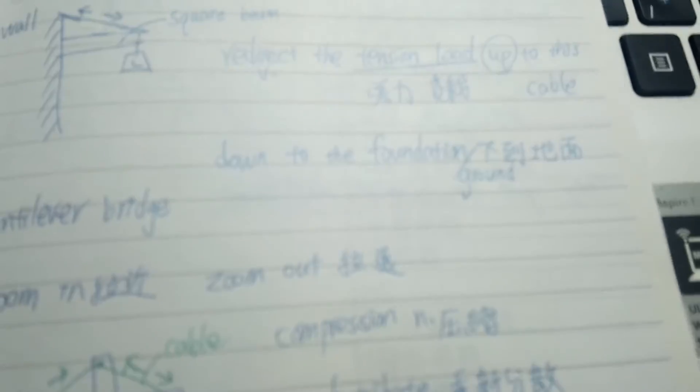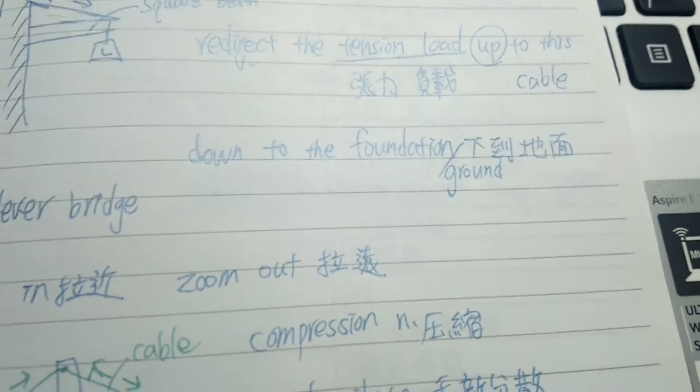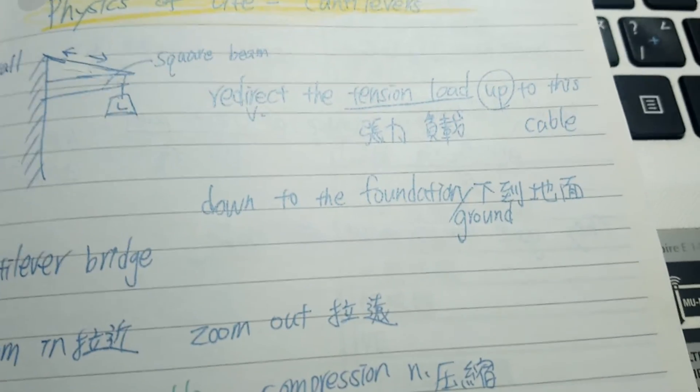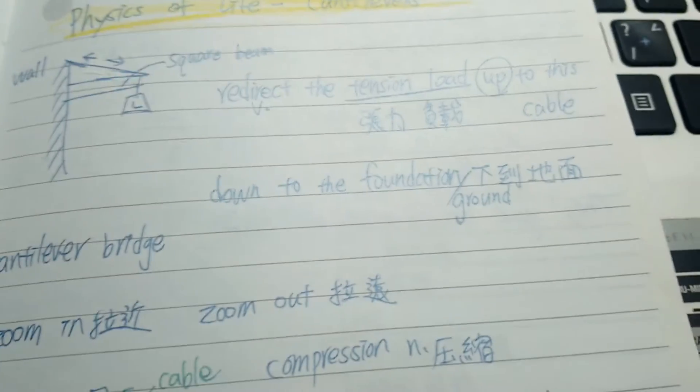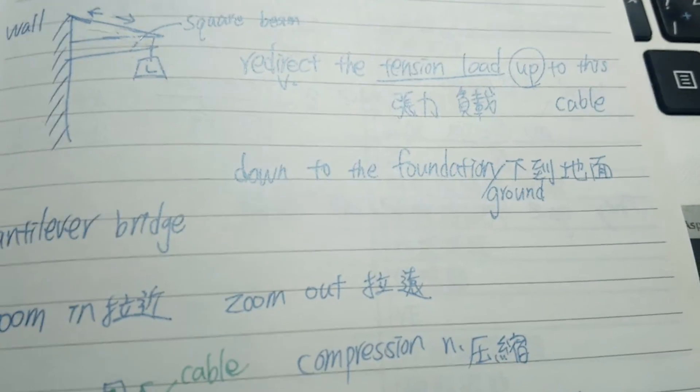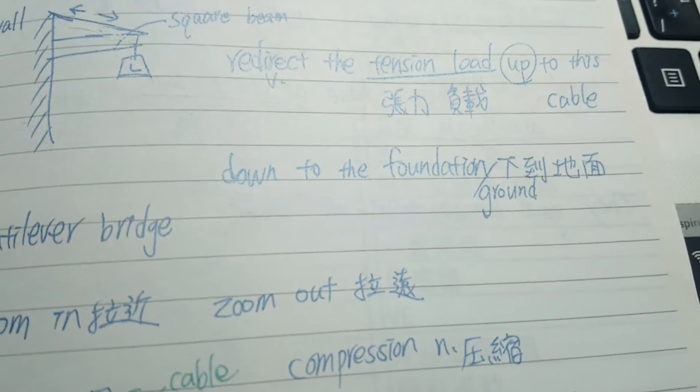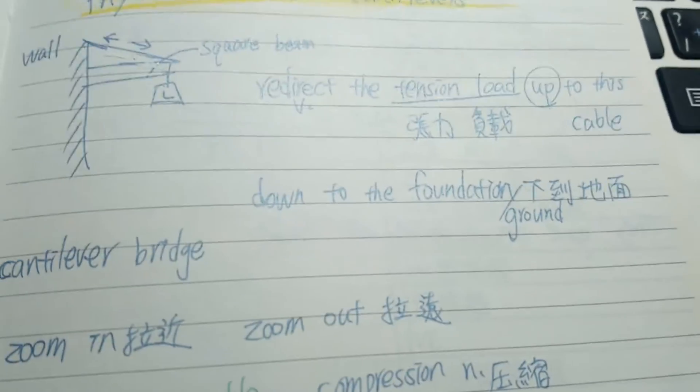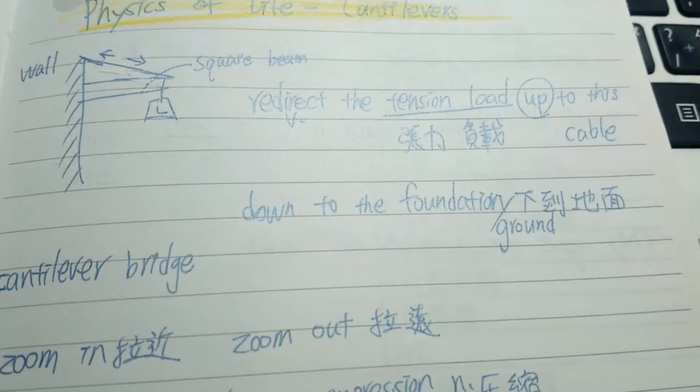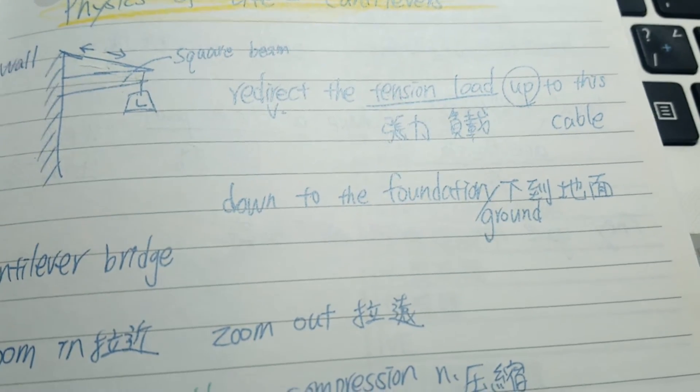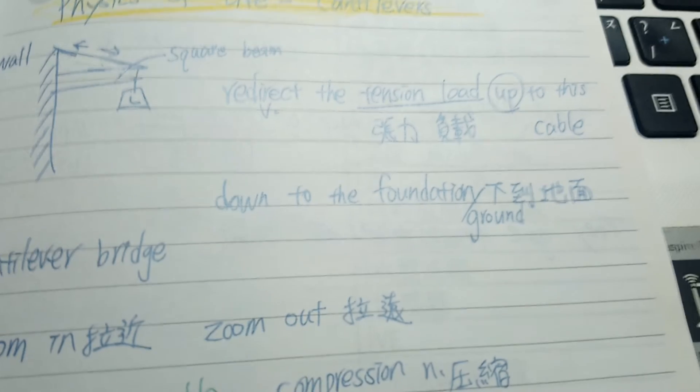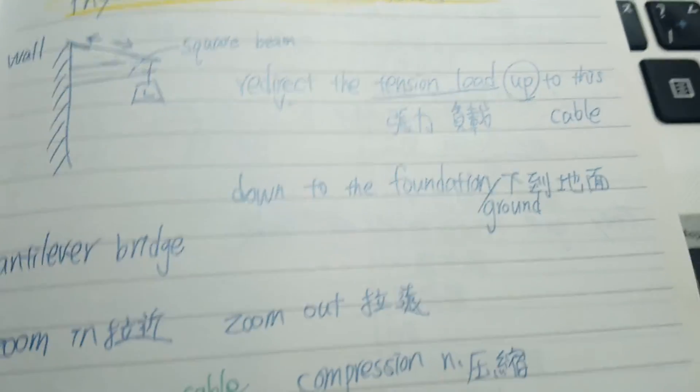Now, you are redirecting the tension load up to this cable over here. 所以現在你就是重新把這個張力的負載,往上把它的方向重新導引到這個纜線, 大概在這邊. But you are still redistributing the load by compression. 但是你依舊是用那個壓縮力來重新分配這個負載. But now, you are redistributing it by compression to the entire beam. 但是你現在是透過整個橫梁來重新分配它的壓縮力.